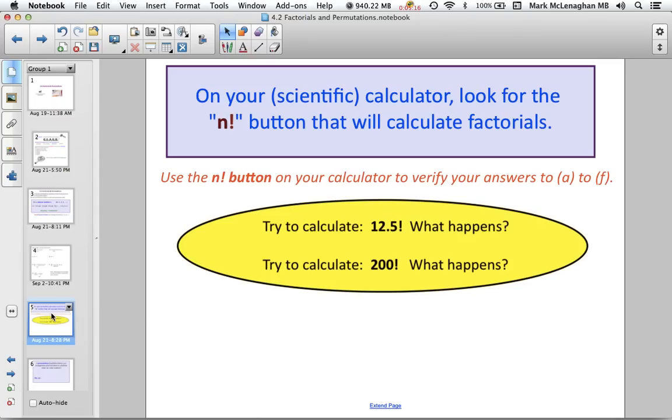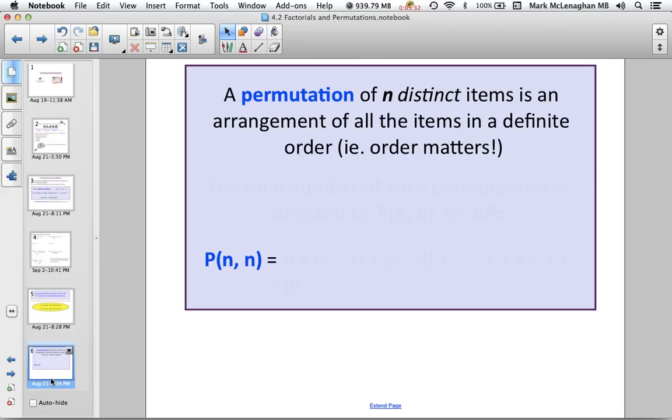And then, just so you can see what the difference is, try to calculate 12.5 factorial and see what happens, as well as 200 factorial and see what happens. Like I said, some calculators will do big numbers. Other calculators have restrictions.